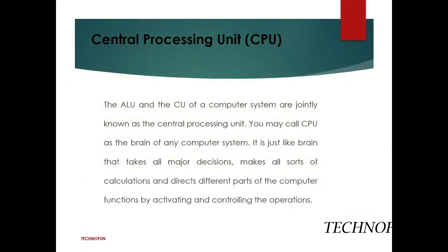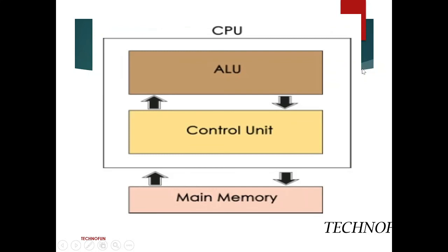Now we will talk about the central processing unit. The central processing unit is the CPU, and as we know, the CPU is the brain of the computer. CPU consists of the ALU and the CU — ALU is the arithmetic logic unit and CU is the control unit. Both jointly make up the central processing unit, and it is only a processing unit.